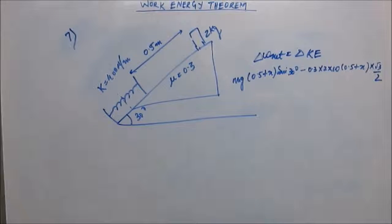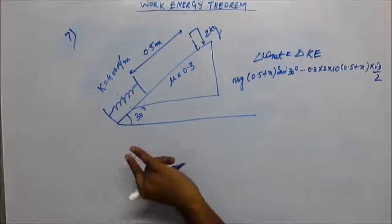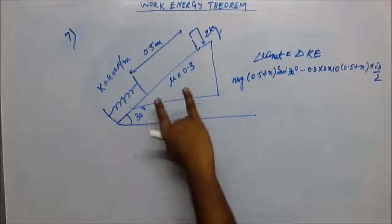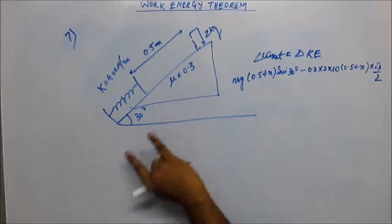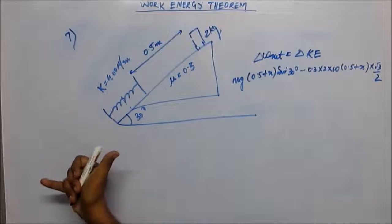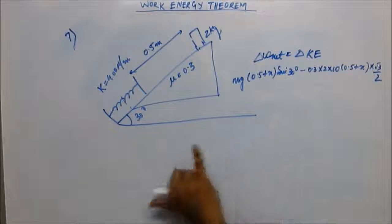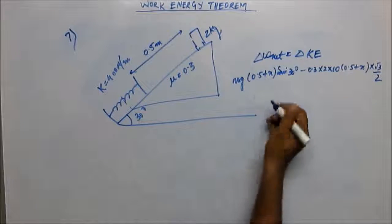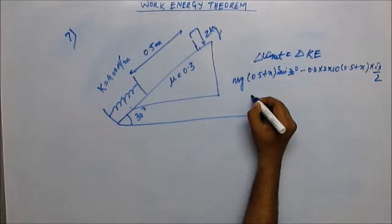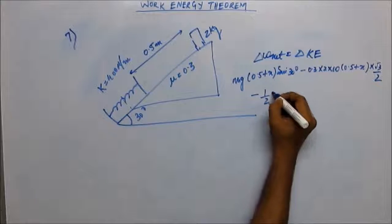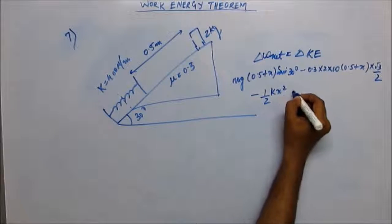And the third work would be done by the spring. Work done by the spring would be negative because the spring will resist the downward motion of the body and apply a force outward. Displacement is inward, so force and displacement are opposite, so work done by the spring would be negative. Work done by the spring we know is half kx squared. This equals zero.